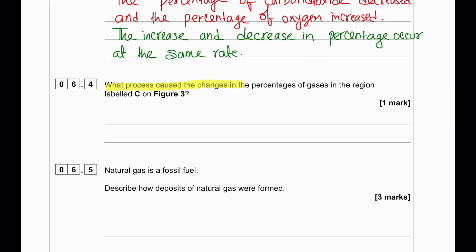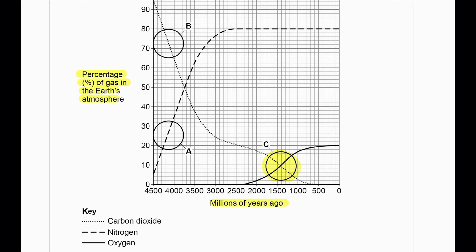The process that caused the changes in region C is photosynthesis, which is mainly responsible for decreasing CO₂ concentration. When the graph shows an increase in oxygen concentration, only then can you mention photosynthesis, because photosynthetic organisms evolved at a particular point — visible on the diagram. So if we said CO₂ is used in photosynthesis at region P, this would be completely wrong.